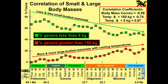The correlation between small and large body mass curves is negative 0.89 — a high mirror image. If you correlate temperature trends with mammals greater than 150 kilograms, the correlation coefficient is minus 0.74. As body mass increases, temperature goes down, or vice versa: as temperature goes down, body masses go up. For mammals under 5 kilograms versus temperature, the correlation coefficient is 0.67.